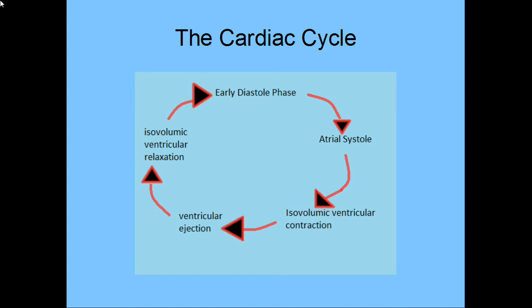Now here's a simple diagram of the cardiac cycle. It starts with the early diastole phase — this is when the heart is relaxed, the ventricles expand, and they begin to fill, but not very quickly. Next we have the atrial systole, which is when the atria contracts and the blood is pumped into the ventricle until it's completely full. After this we have the isovolumic ventricular contraction, which is where the ventricle muscles start to contract, but very slowly, so the ventricle volume isn't changed at all.